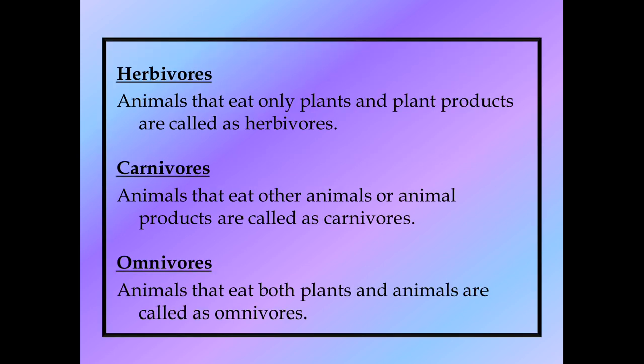So the grouping of animals based on food habits gives us three categories. Now let's look at the definitions. Animals that eat only plants and plant products are called herbivores. Animals that eat other animals or animal products are called carnivores. Animals that eat both plants and animals are called omnivores.